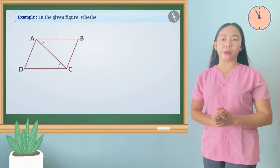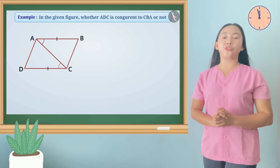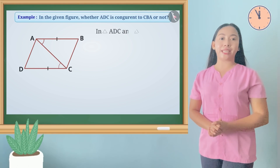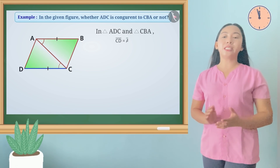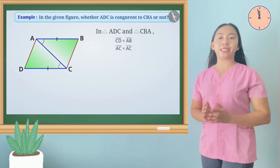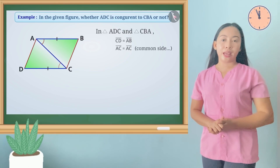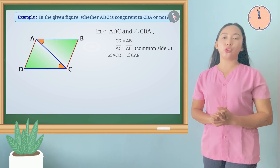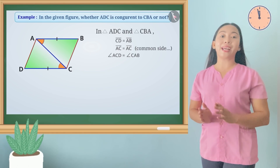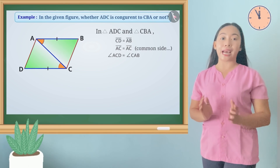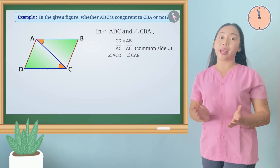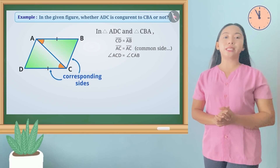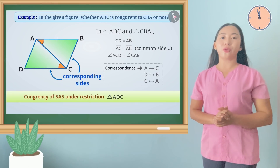Let's have another example. In the given figure, identify if triangle ADC is congruent to triangle CBA. In triangle ADC and triangle CBA, side CD is equal to side AB, side AC is equal to side AC, and angle ACD is equal to angle CAB. Two corresponding sides and the included angle of triangle ADC are equal to those of triangle CBA. Hence, by the SAS congruence postulate, triangle ADC is congruent to triangle CBA.